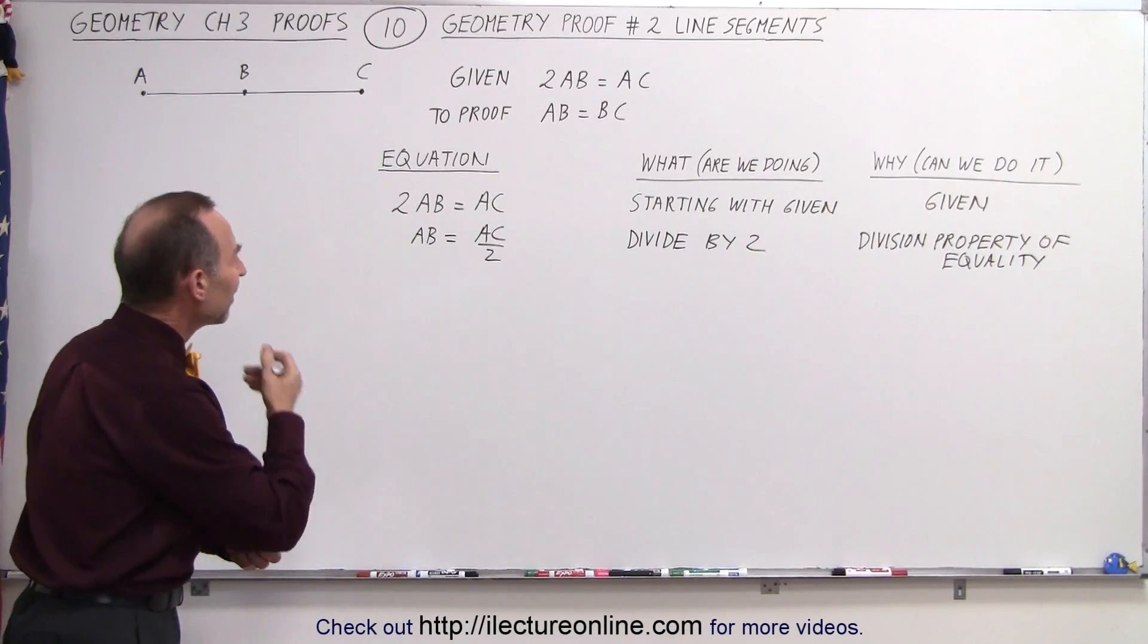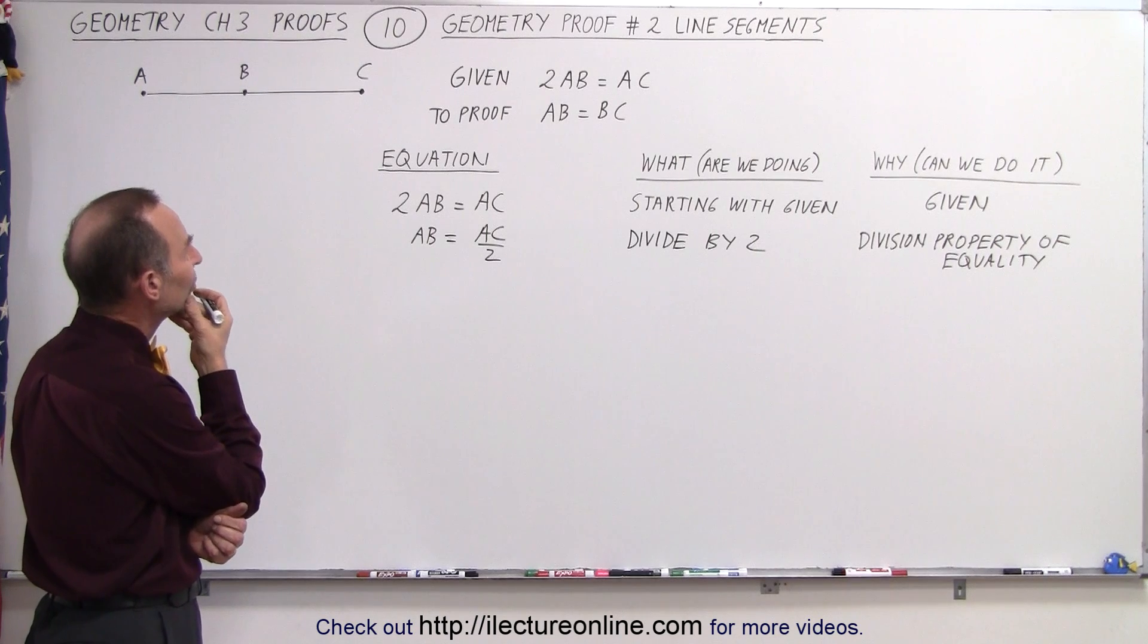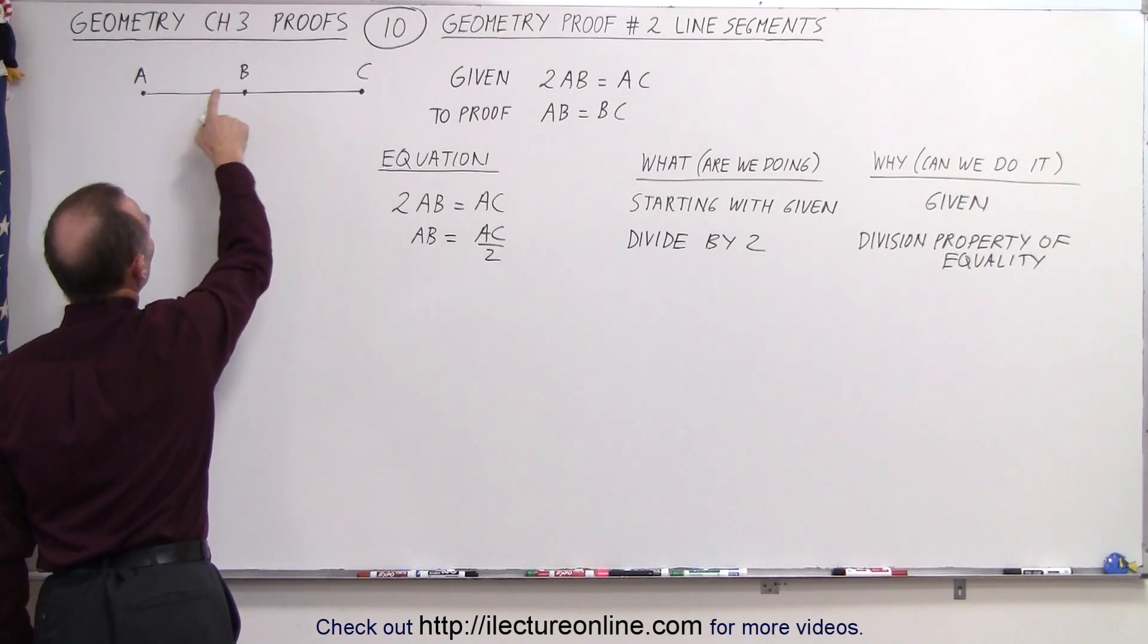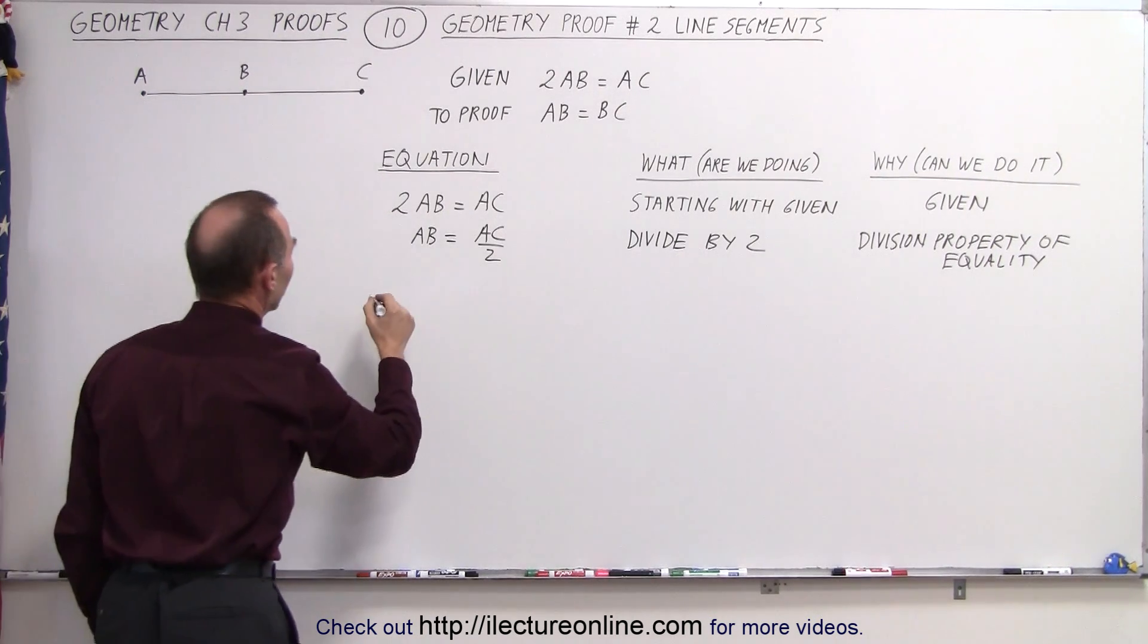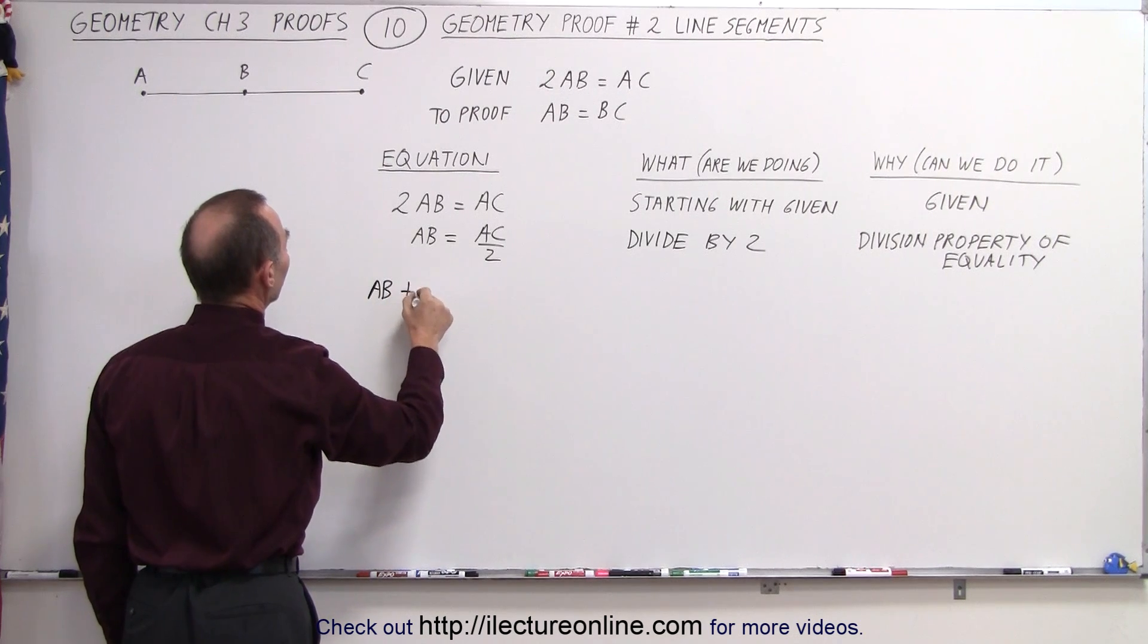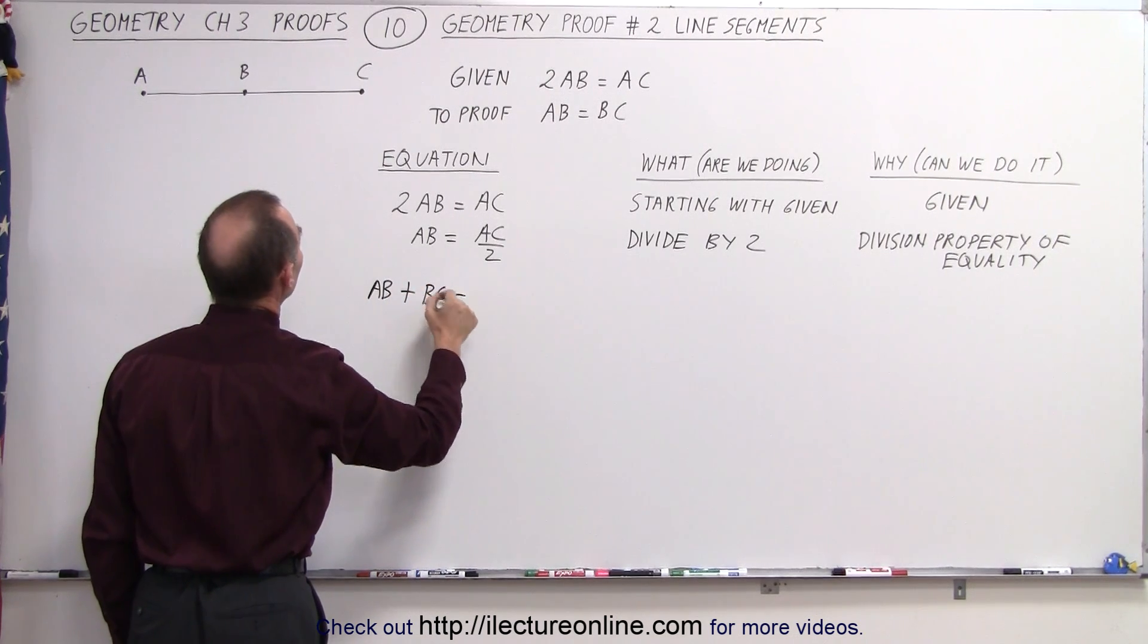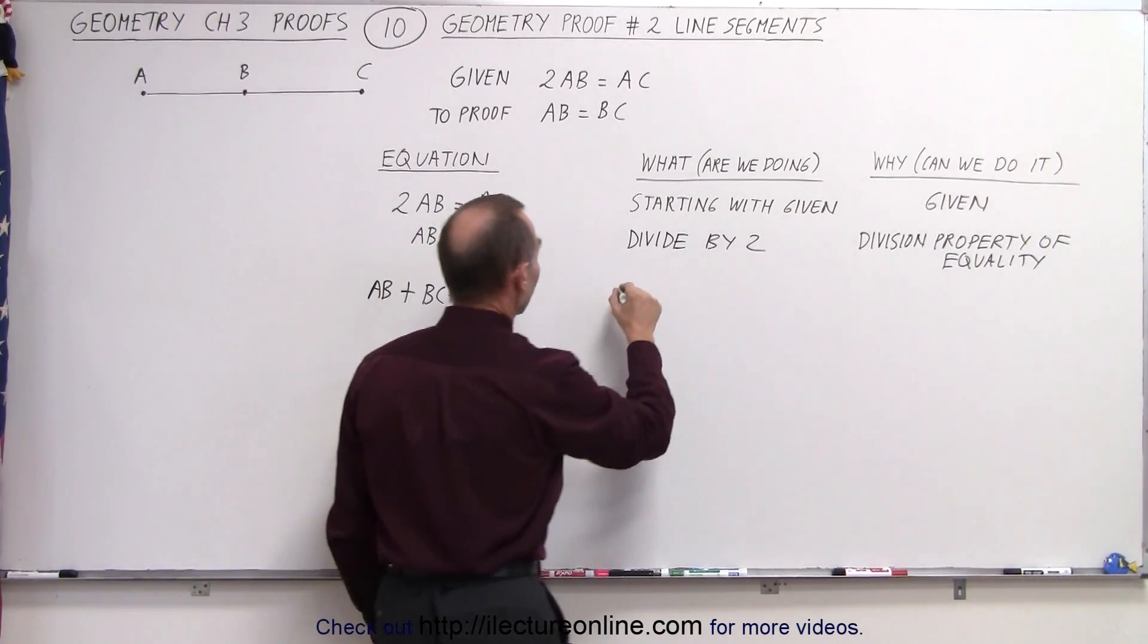Okay, now that I have that, what I'm going to do next is I'm going to say that if I add AB to BC, I should get AC. So now I write that the length of AB added to the length of BC is equal to the length of AC. What I'm doing is I'm adding the two line segments.